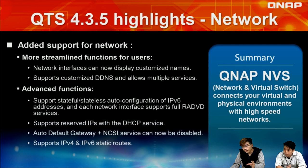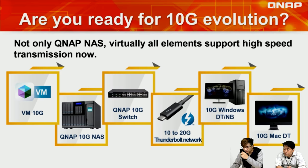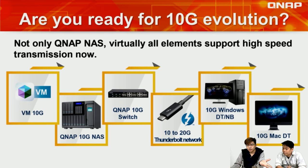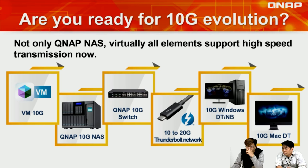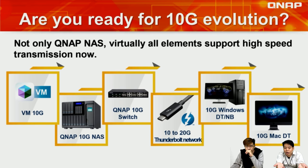These are the new features in the Network and Virtual Switch tab. Are you already using 10G or ready for it? You can see that support spans the virtual switch, real NAS, and even physical switches — Windows, Mac, and even the new iMac Pro are all prepared for 10G. You can buy a 10G NIC from Amazon or eBay, and in 2018 the price is less than $100, making it easy to deploy a 10G network.